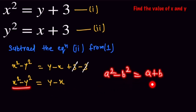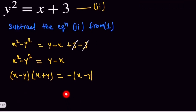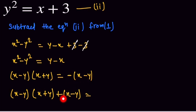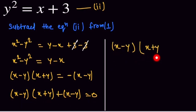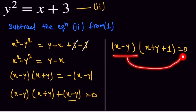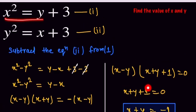Here x² minus y² can be written in the form (a+b)(a−b), so it becomes (x+y)(x−y). We multiply by negative, and transfer x minus y to the other side, so it becomes plus (x−y) equal to 0. We factor out (x−y), giving (x−y)(x+y+1) = 0. So x plus y plus 1 equals 0, meaning x plus y equals minus 1. Let's call this our first solution.